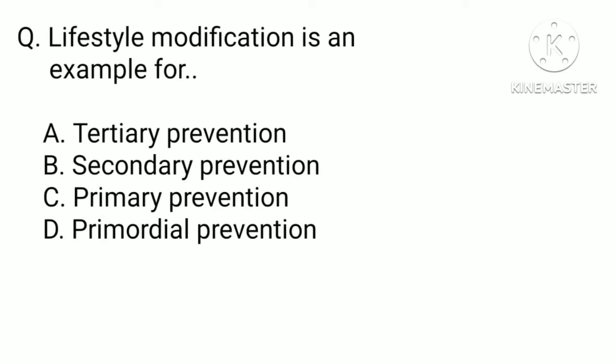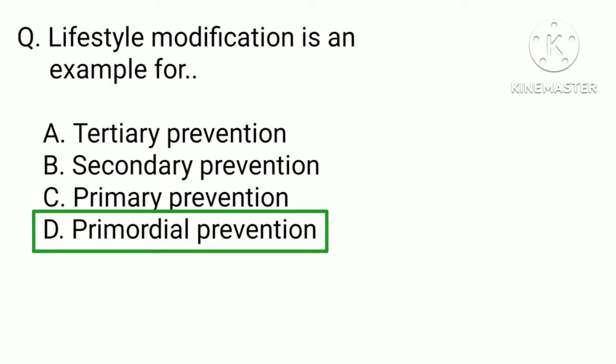Lifestyle modification is an example of which level of prevention: a) tertiary prevention, b) secondary prevention, c) primary prevention, or d) primordial prevention? The correct answer is d) primordial prevention. Primordial prevention involves avoiding the development of risk factors through lifestyle modification. Examples include improving sanitation, establishing healthy communities, and promoting healthy lifestyles in childhood.